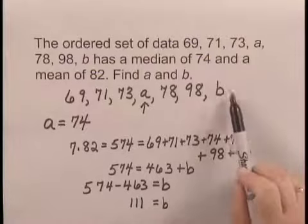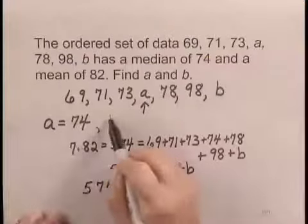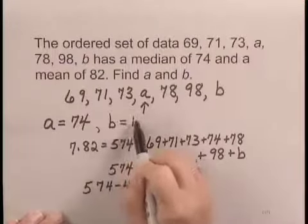As a very quick check, note that b as 111 is the largest number in the list, as it should be. So if a is 74, b is 111.